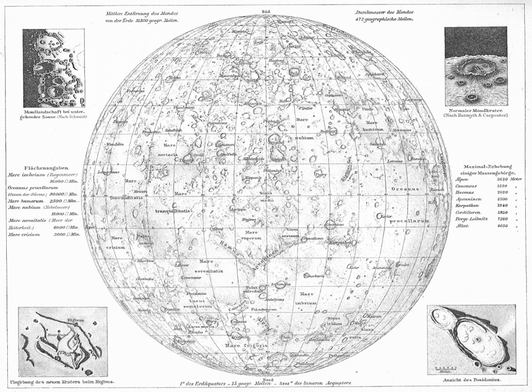Later, as higher resolution images and maps become available, additional features are named at the request of investigators mapping or describing specific surfaces, features, or geologic formations. Anyone may suggest that a specific name be considered by a task group. If the members of the task group agree that the name is appropriate, it can be retained for use when there is a request from a member of the scientific community that a specific feature be named.